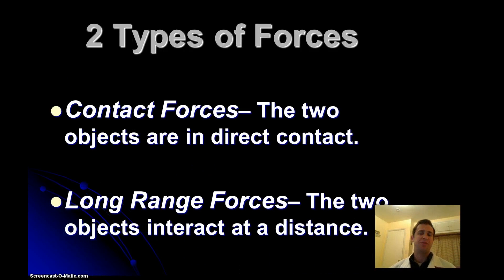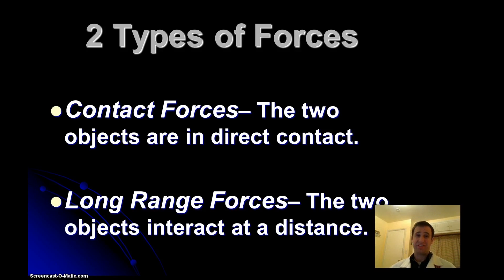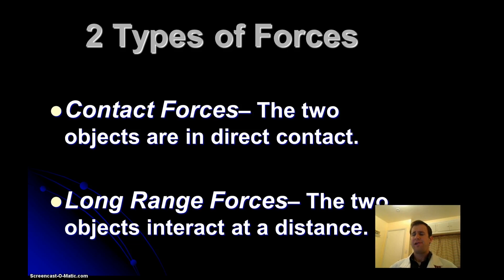There are two different types of forces. We have contact forces, and that's when we have two objects that are in direct contact. And we also have long-range forces — that's when the two objects can interact at a distance without even touching each other. That might seem a little bit weird. Two objects can actually push or pull on each other without touching? And no, I'm not talking about using a rope, because the rope is still touching — that would be a contact force.